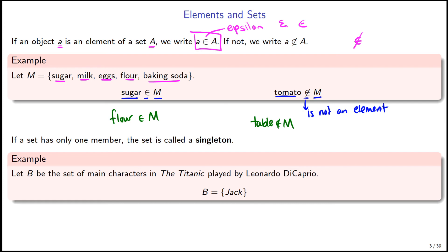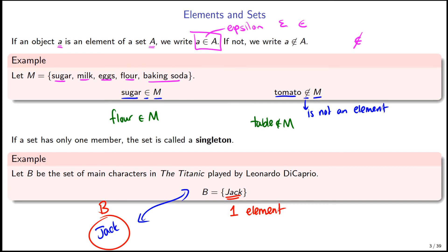If a set only has one element — one member or one object — it's called a singleton. Suppose we have a set B which is all the main characters in Titanic played by Leonardo DiCaprio. He played a character named Jack. So if we let B equal that set, which just has Jack in it, we can see there's only one element — this set is called a singleton, or a one-element set. Visually, this would be a circle with only Jack inside.